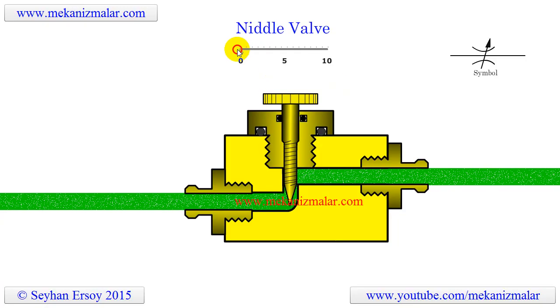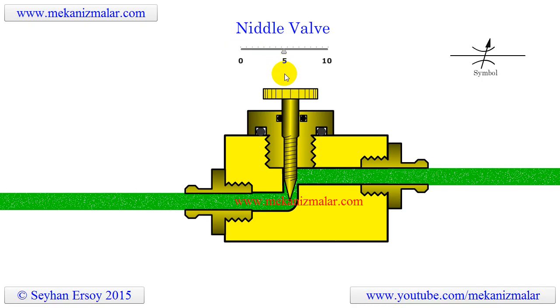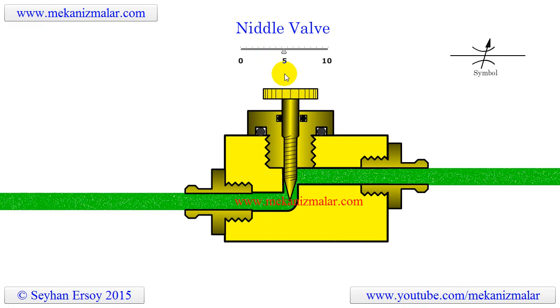For example, initially there could be low resistance to piston advancement, and the piston could jerk ahead very rapidly. As soon as it encounters resistance, it will move at a slower rate.